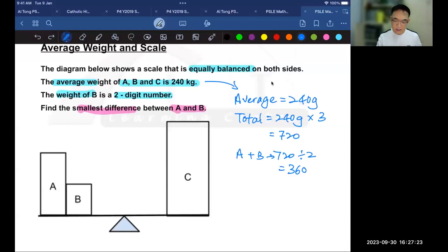If your answer is 99, then you're right. In order to get a small difference, I need B to be large. The largest two-digit whole number is 99, so B is 99.